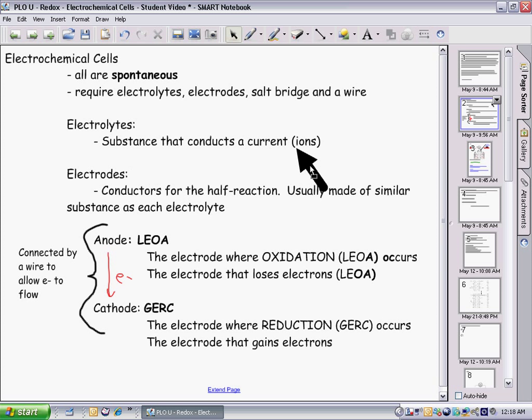An electrolyte is any substance that conducts a current, created by ions in a solution. The electrodes are the conductors for each half-reaction. The electrodes are where each half-reaction actually occurs and are usually made of similar substances as each electrolyte.